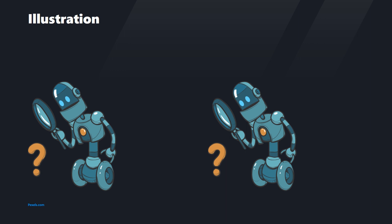On this slide we have two illustrations of a robot, originally a vector file. They look identical, don't they? The first one has been pasted specially as an enhanced metafile, which is a vector format for Windows applications.